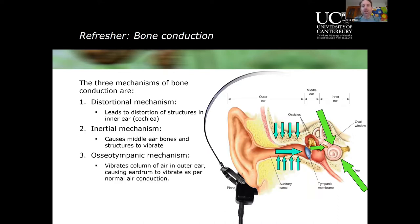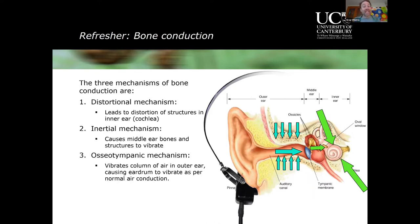The third mechanism is the osseotympanic mechanism. The bony portion of the ear canal, when the skull bones vibrate, causes sound to enter the air inside the ear canal. That sound travels towards the tympanic membrane, vibrates the eardrum, passes through the middle ear structures and into the cochlea — just like air conduction. You can sense this right now: if you put your fingers on your ears and talk, you would hear your own voice quite loudly.